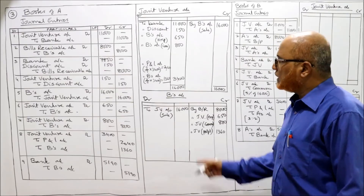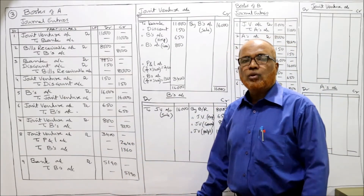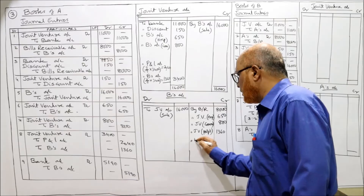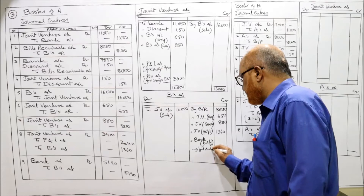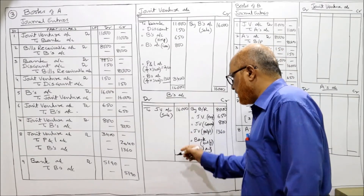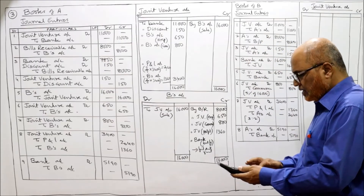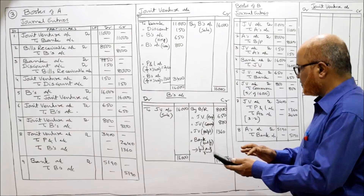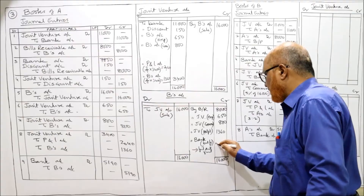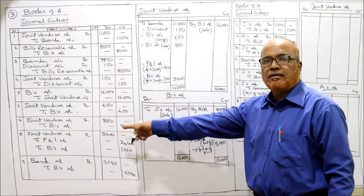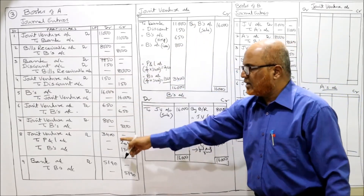All entries are posted and joint venture account is closed. Now for B's account - the balance amount is received. Bank Account Dr. to B's Account - B's account is credited by bank as the balancing figure, final amount received. Debit side is 16,000. From this 16,000 subtract 8,000, minus 650, minus 800, minus 1,360 equals 5,190. So 5,190 is the balance amount received from B. B's account and joint venture account are both closed. All entries in the books of A are over.